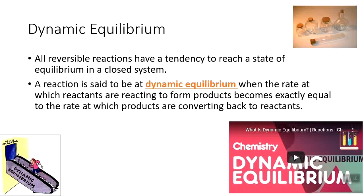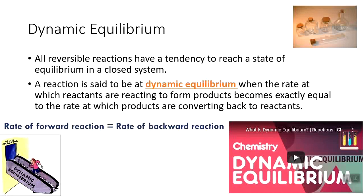A reaction is at dynamic equilibrium when the rate at which reactants are forming product becomes exactly equal to the rate at which products are converting back to reactants. Rate means speed, so we can think of it as the speed of the forward reaction equals the speed of the backward reaction.